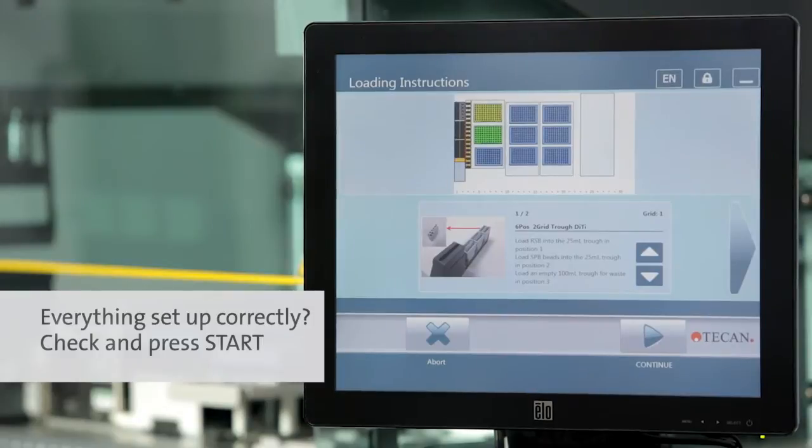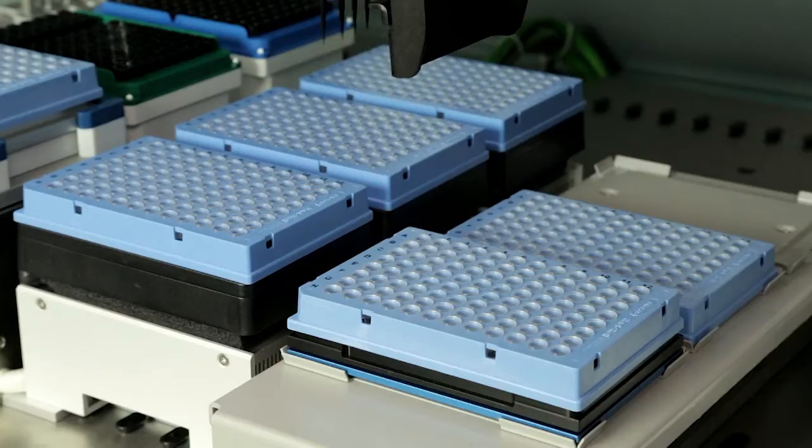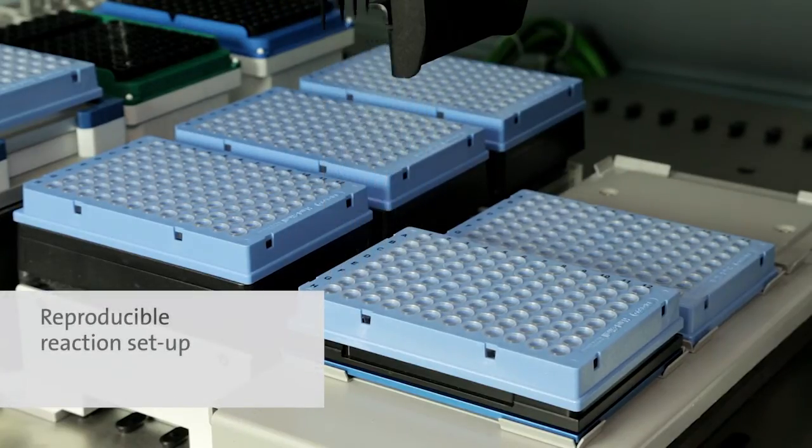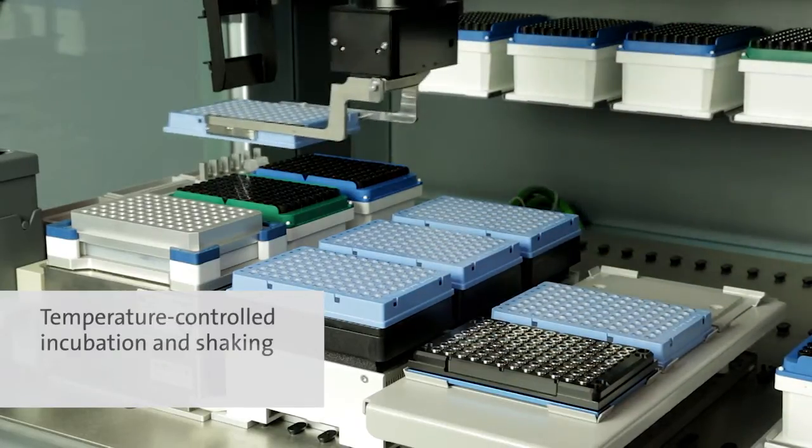After setup, the confirmation screen lets you double-check before starting the run. The FreedomEvo NGS workstation includes a flexible 8-channel air-liquid handling arm for high reproducibility pipetting.